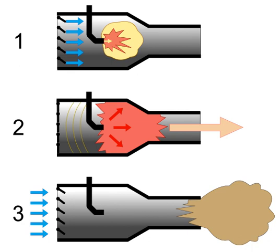Valved pulsejet engines use a mechanical valve to control the flow of expanding exhaust, forcing the hot gas to go out of the back of the engine through the tailpipe only, and allow fresh air and more fuel to enter through the intake as the inertia of the escaping exhaust creates a partial vacuum for a fraction of a second after each detonation. This draws in additional air and fuel between pulses.